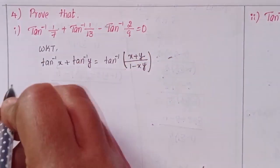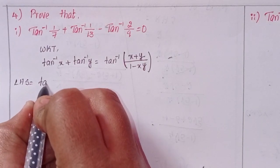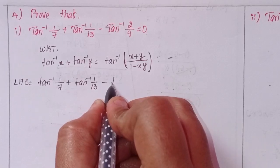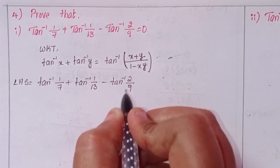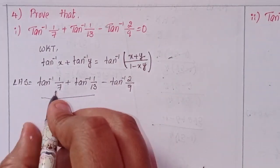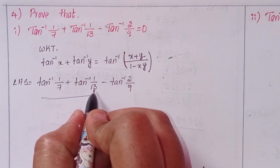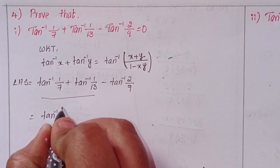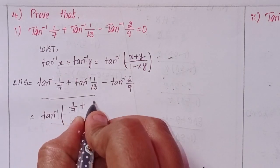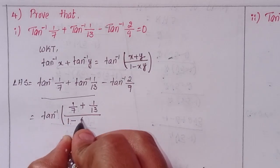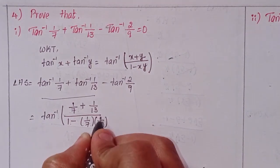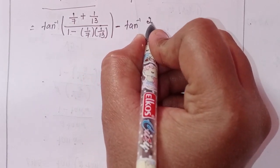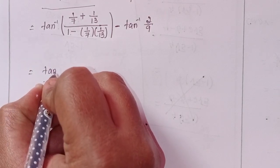Prove the first one: tan inverse 1 by 7 plus tan inverse 1 by 13 minus tan inverse 2 by 9 equals 0. LHS equals tan inverse 1 by 7 plus tan inverse 1 by 13 minus tan inverse 2 by 9. For these two, apply this formula: x means 1 by 7, y means 1 by 13. So tan inverse of 1/7 plus 1/13, divided by 1 minus 1/7 into 1/13.